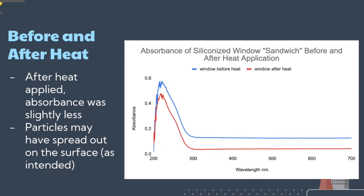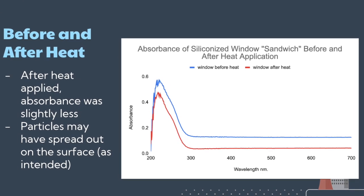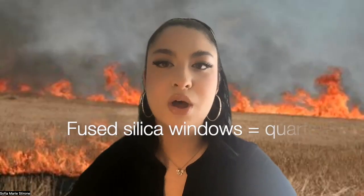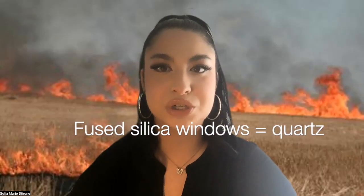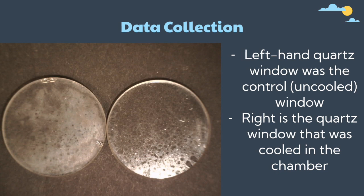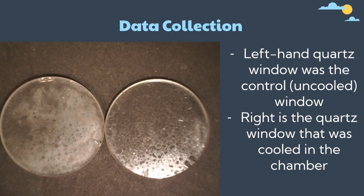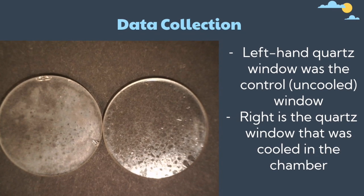Fused silica windows yielded the most uniform films when exposed to additional heating, cooling, and softening by organic vapor.